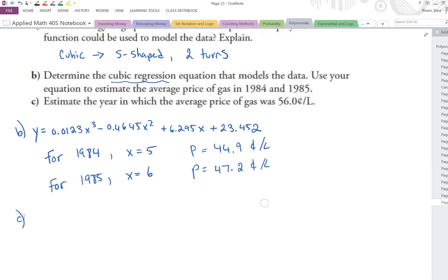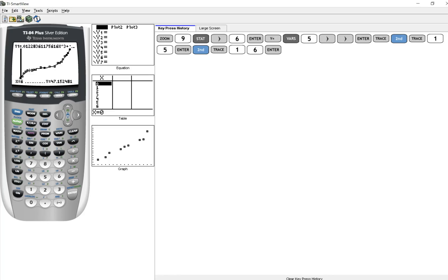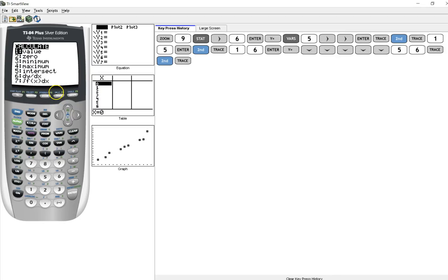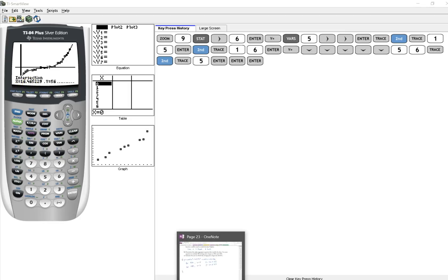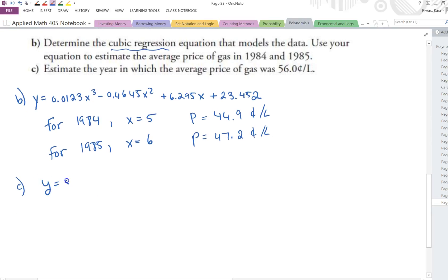For c estimate the year in which the average price of gas was 56 cents per liter. Well in this case now we're going the opposite. We're going to put the 56 in here under y2, and if you hit trace you can see we're going to get our horizontal line. So in this case we're going second trace intersect 5, enter enter enter and it would be for a y value 56 cents per liter. So that's 16.46 years after 1979. So what year would that be? So in c we put in y is equal to 56, we got a corresponding value for x when we did second trace intersect. We got a corresponding value of 16.49 so if we take 1979 and add 16.49 we get 1995.49, which means the year would be 1995.